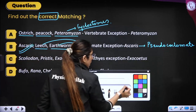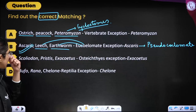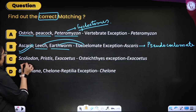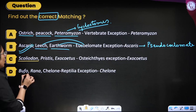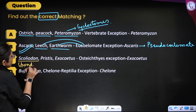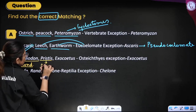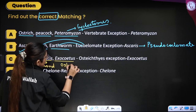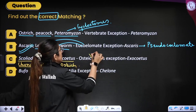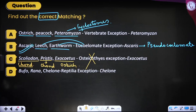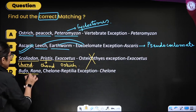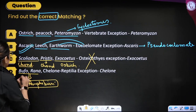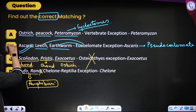Third option: Scoliodon, Pristis, Exocoetus — saying they are Osteichthyes, with Exocoetus as exception. But Scoliodon is Chondrichthyes (cartilaginous fish), Pristis is also Chondrichthyes, and Exocoetus is Osteichthyes — so they got it reversed. Fourth option: batrachia — they are saying reptile. No, batrachia are amphibians, not reptiles. This is also wrong. We go for option B.